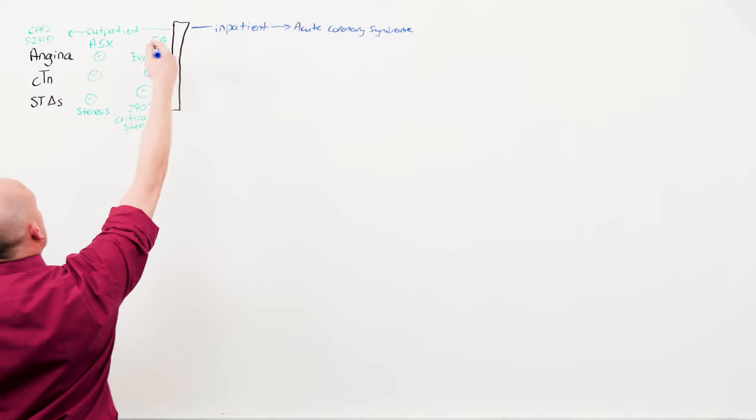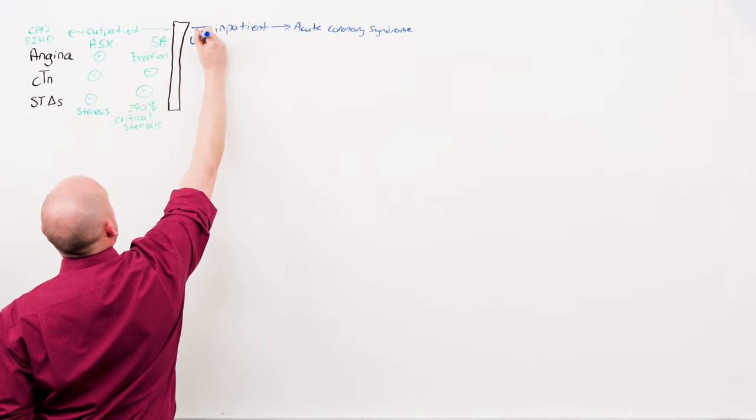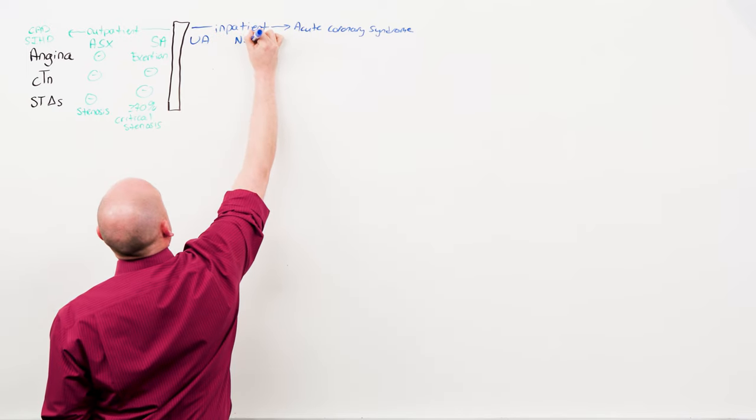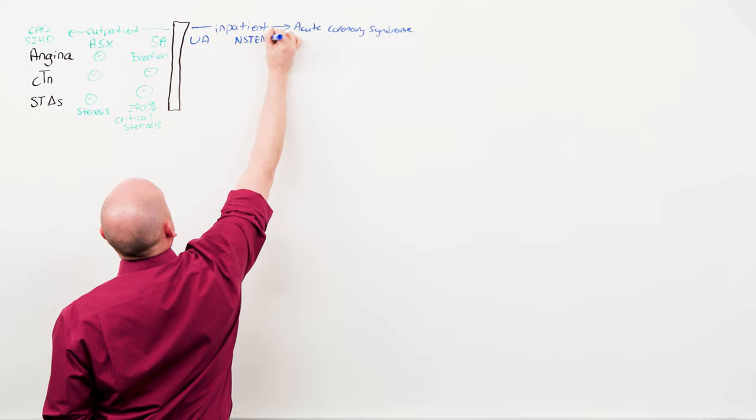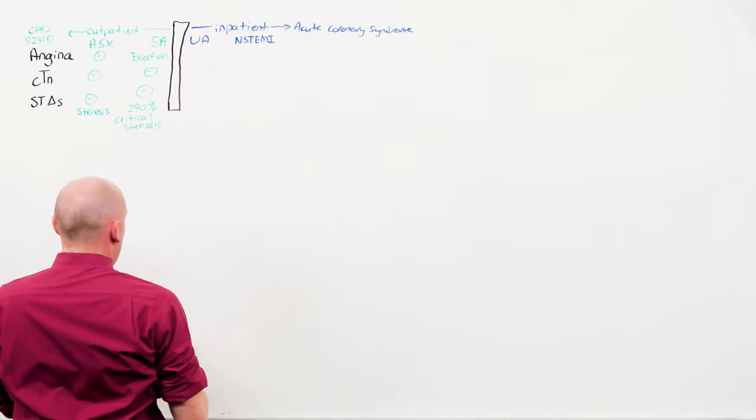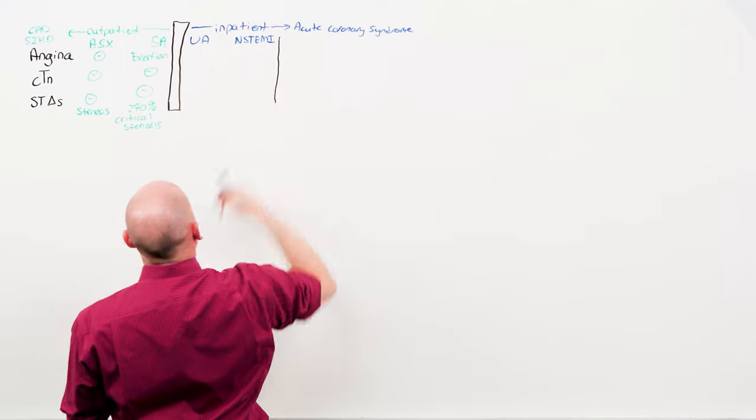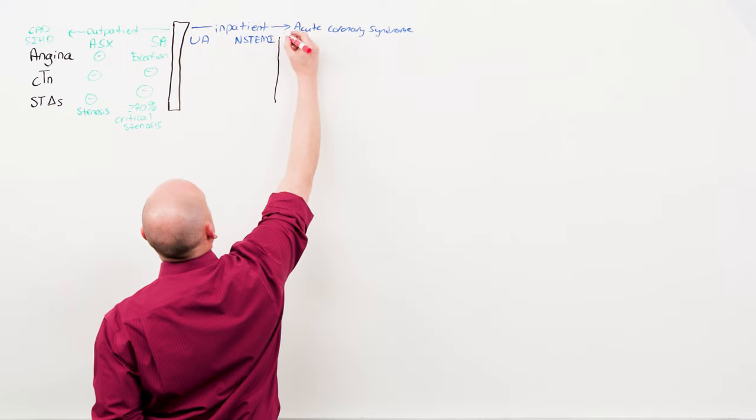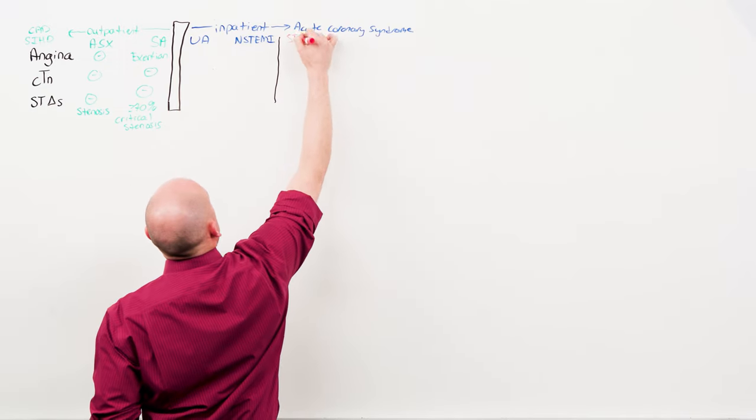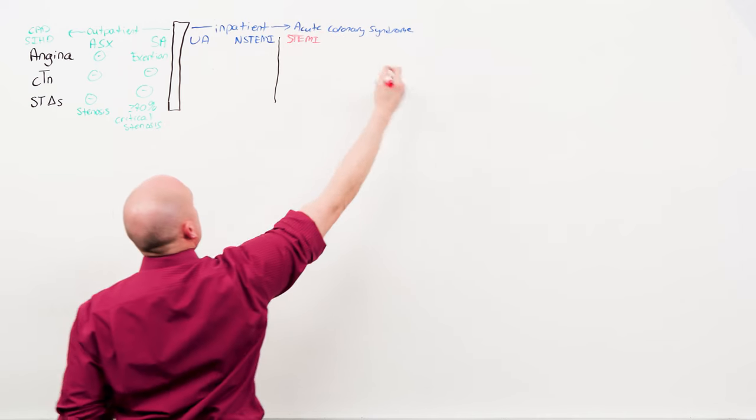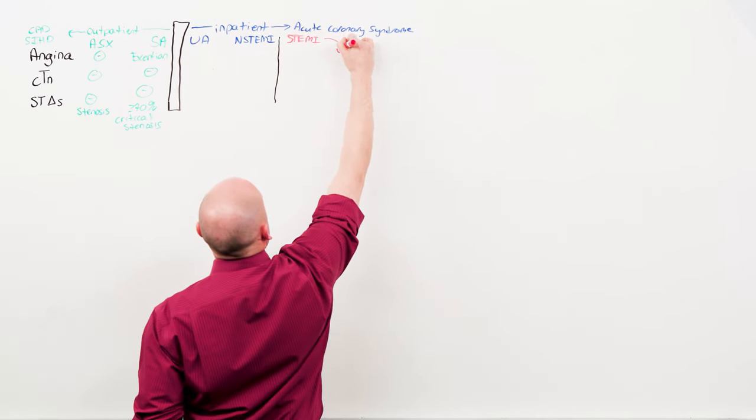One grade up from stable angina is unstable angina. Then a non-ST segment elevation myocardial infarction, an NSTEMI. And another wall, not quite as tall or as big, between NSTEMI and STEMI, ST segment elevation myocardial infarction. And the red one is special because not only is it inpatient, it goes straight to the cath lab.